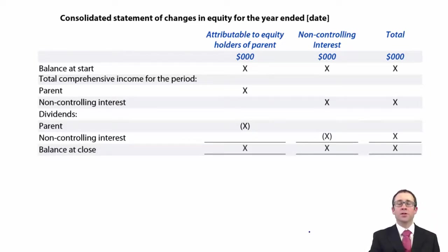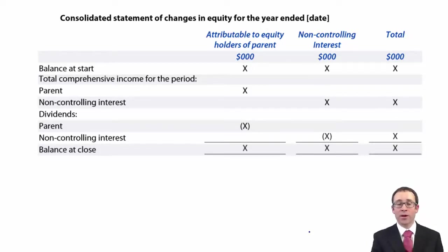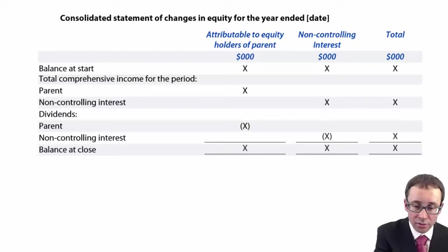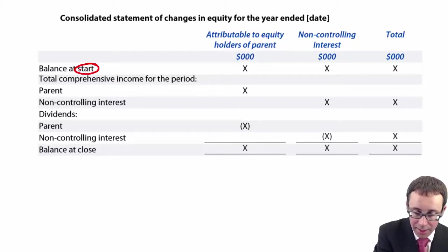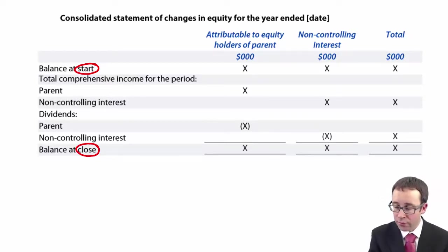What we're going to have to do now is look at things from a group perspective. You've got the pro forma within the notes, and what you can see there is it goes through and takes the opening balances and looks at the balances at the end. What you need to appreciate is that the statement of change in equity looks at the movement in equity.